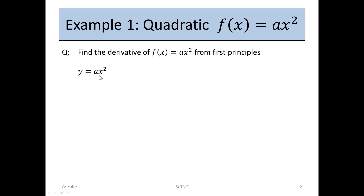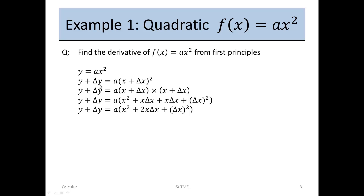We start by writing the function, and in place of y we use y plus delta y, and where we had x we put in x plus delta x. So y plus delta y is a times (x plus delta x) squared, which is (x plus delta x) times (x plus delta x). Multiplying across: x by x is x squared, x by delta x is x delta x, delta x by x is x delta x, and delta x by delta x is delta x squared. Bringing them together: x squared, the two x delta x terms combine to give 2x delta x, and delta x squared.